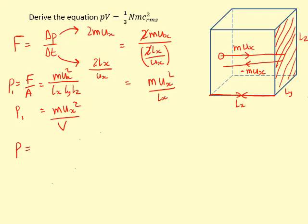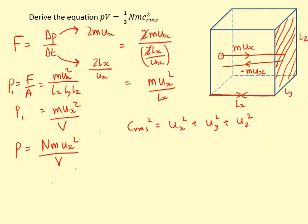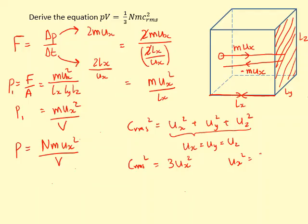Pressure equals Nmux² over V. But since the motion is random, we should use the RMS speed. The RMS speed squared is ux² + uy² + uz² — like Pythagoras in 3D. Because the particle is equally likely to go in any direction, ux equals uy equals uz, so this simplifies to 3ux². Therefore crms² equals 3ux², meaning ux² equals crms² over 3.